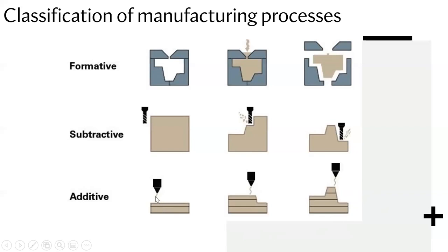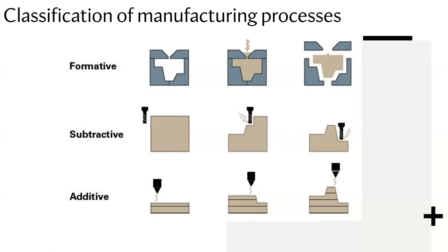There are also examples of subtractively manufacturing polymers, but that's for very special polymers that maintain their shape and mechanical properties at elevated temperatures where the cutting bits interact with the material. For example, engraving or cutting acrylic sheets into a certain shape is exactly that — but this is a very small and narrow group of processes when it comes to polymers.